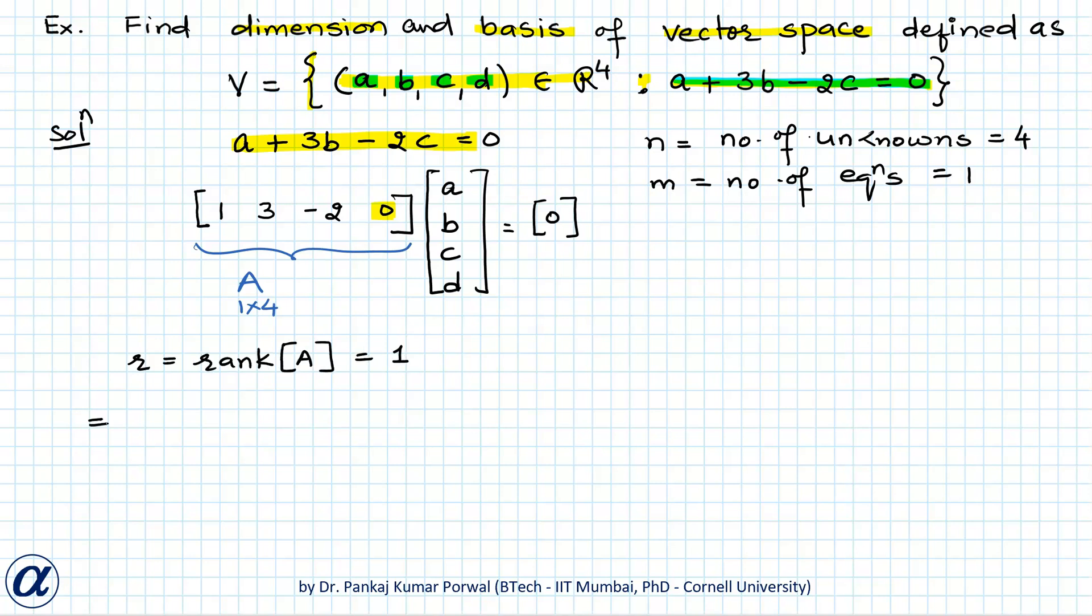And we know that a homogeneous system of equations has n minus r, that in this case is 4 minus 1 equals 3 free variables. And that is also equals to the dimension of the solution space of our system of equations. And there will be r, that equals 1, constraint variable that we have to solve for using our equation.